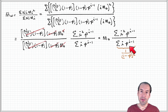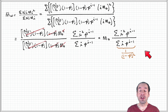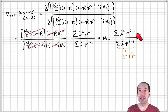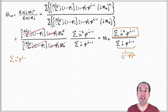We already obtained an expression for the term in the denominator when we calculated the number average molecular weight. We showed that this summation is equal to 1 over (1-p)². Now we'd like to obtain a similar expression for the summation in the numerator.